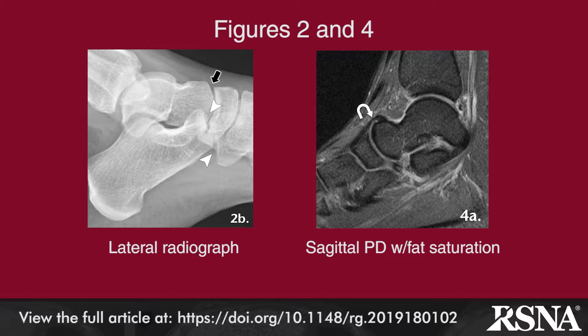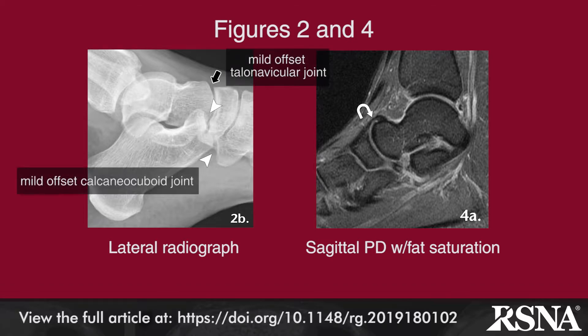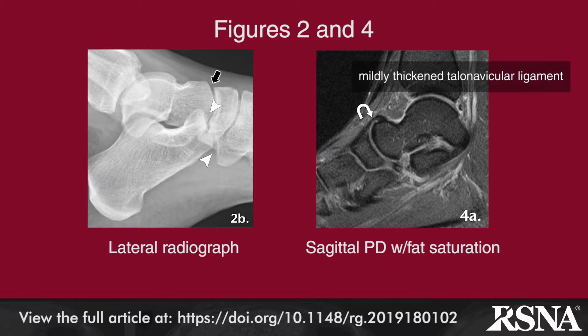Two important pitfalls in imaging of the joint are reviewed. First is the normal offset of the bones at these two joints on lateral radiography, as shown in figure 2. Second is the normal thickening of the redundant dorsal talonavicular ligament on sagittal MR, which should not be mistaken for an old sprain.